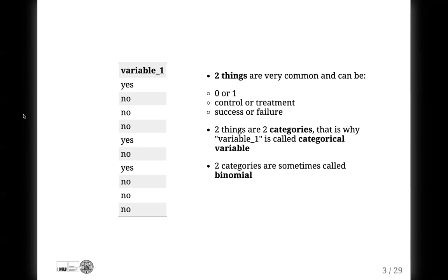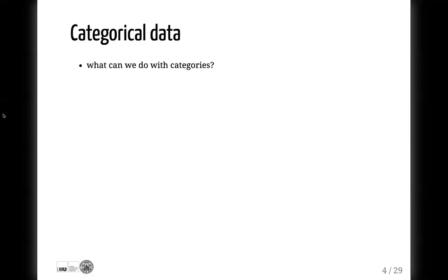Binomial is a useful term, but I don't like statistical jargon because, for example, you cannot extend it. There is no such thing as a trinomial or tetranomial variable. So don't be confused by these statistical terms, just continue learning. Now since we have categorical variables, the only question is what can we do with them? And the only answer is we can count them. Nothing more.